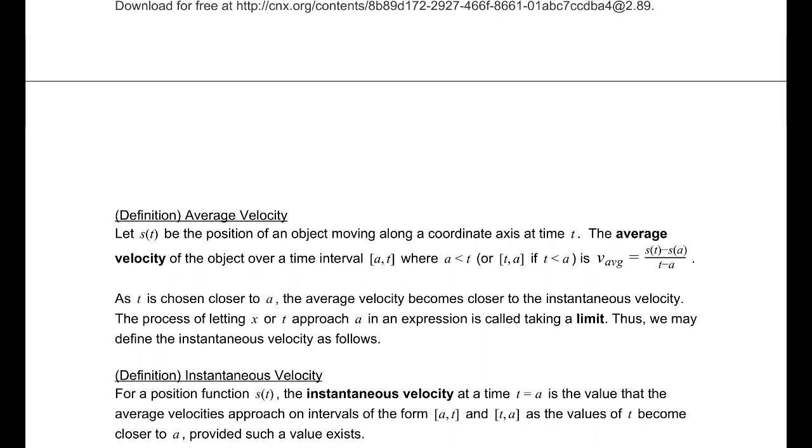Relatedly, we have the idea of average velocity, because velocity is the rate of change of position. If s(t) is the position of an object moving along the coordinate axis at time t, then the average velocity of the object over a time interval from a to t, where a is less than t, or (t, a) if it's the other way around, is v_avg = [s(t) - s(a)]/(t - a). That's the change in position divided by change in time. As t is chosen closer to a, the average velocity becomes closer to the instantaneous velocity, just as we were discussing the secant line versus the tangent line. The process of letting x or t approach the value a in an expression is called taking a limit.